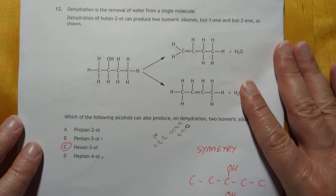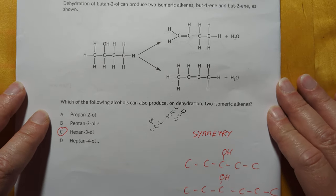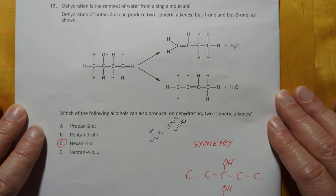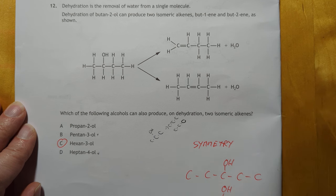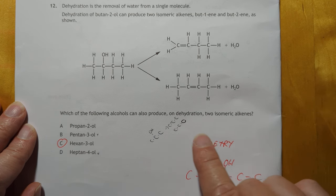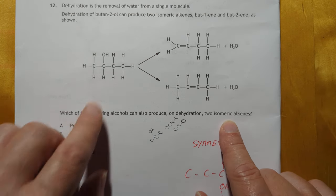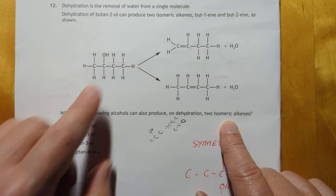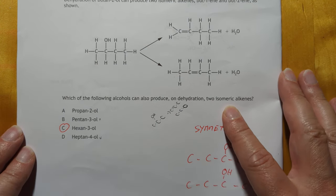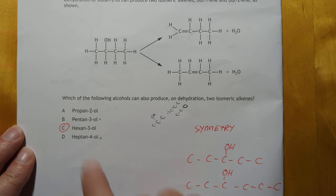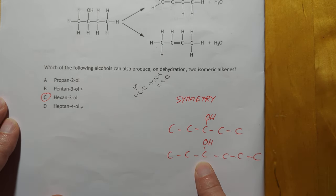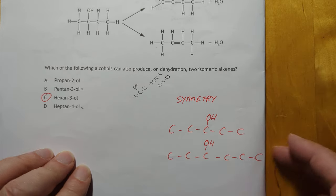Dehydration. Can I get this on the screen? There we go. This is a symmetry question. If you're going to get two isomeric alkenes, that means the hydroxyl cannot be on the center carbon atom. So basically, it's which one of these is the hydroxyl cannot be on the center carbon atom. As you can see down here, I was working on a few and the answer is it is hexane 3-ol.